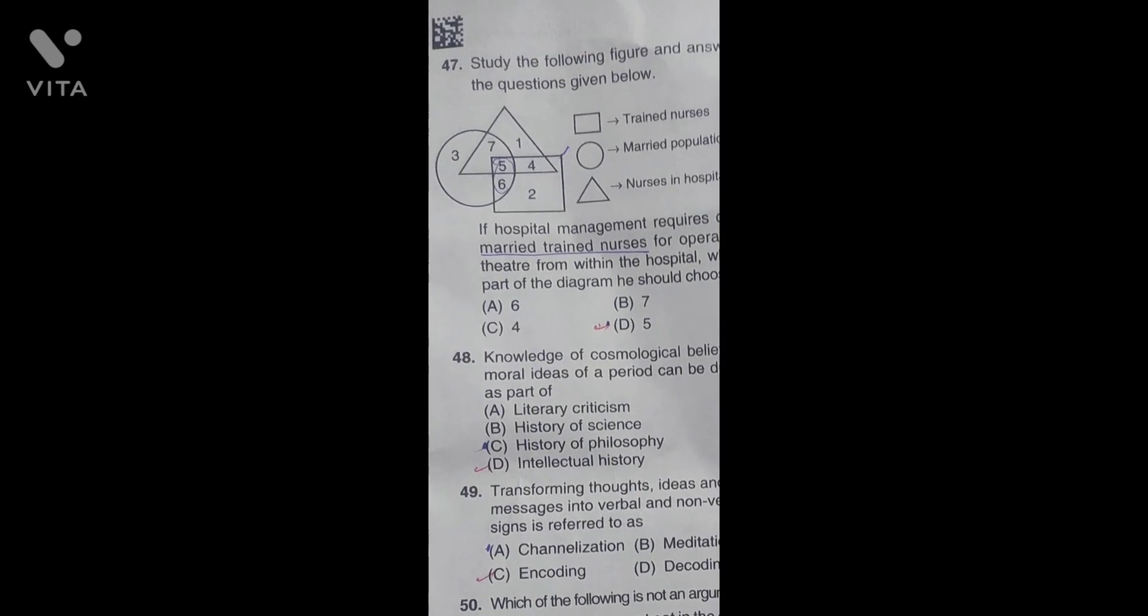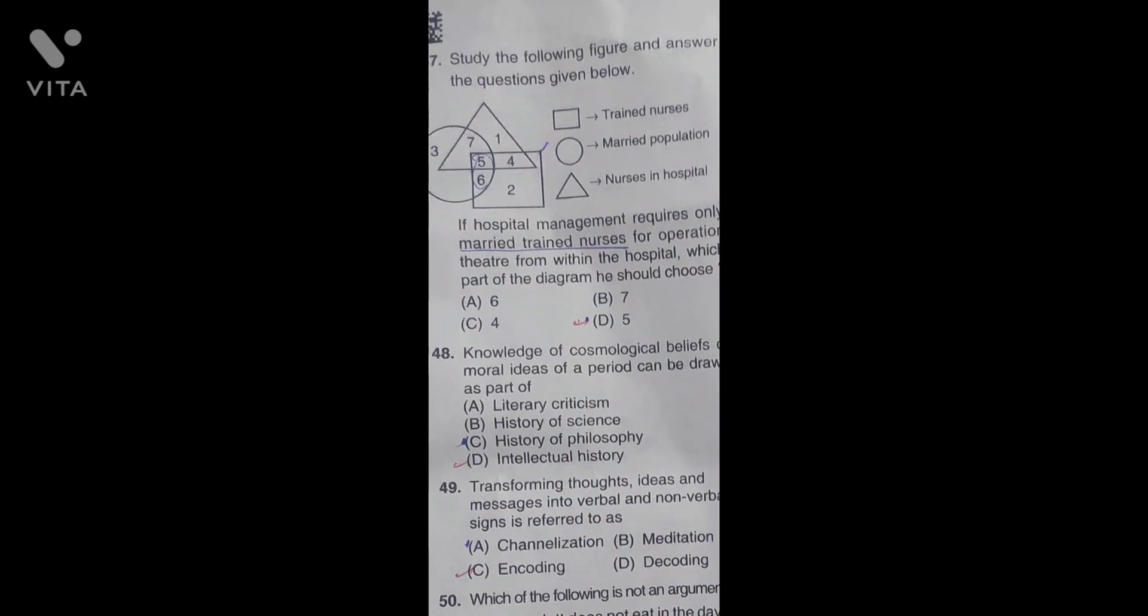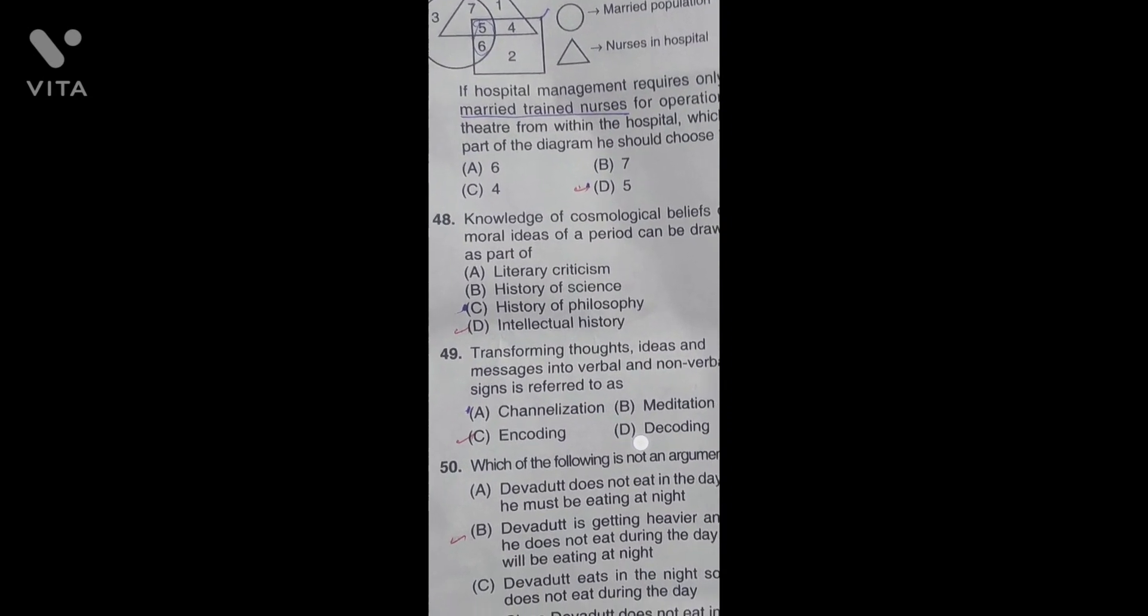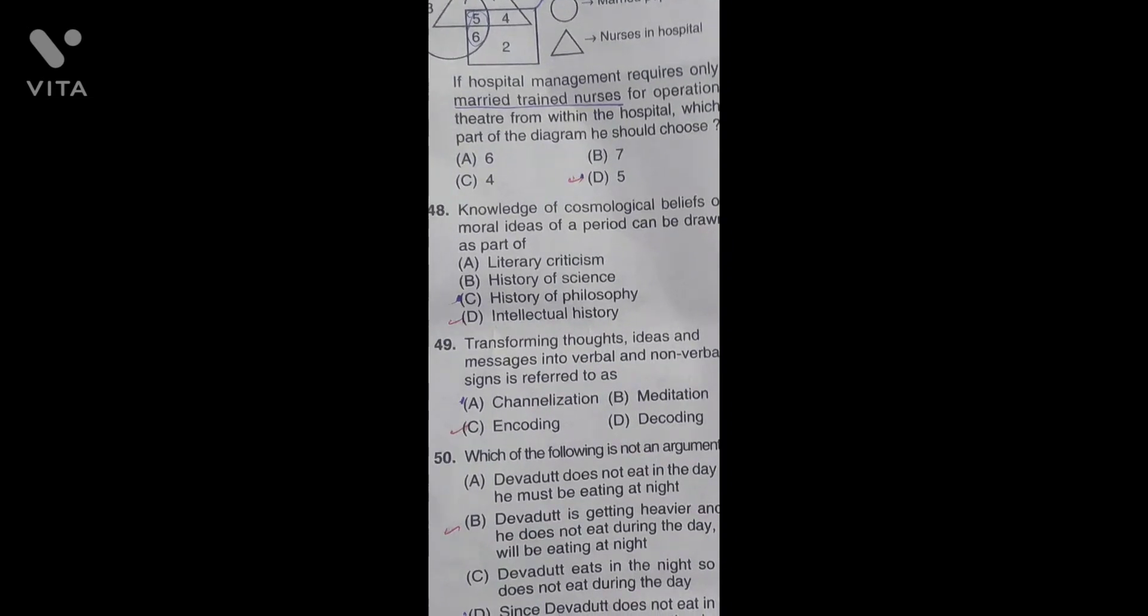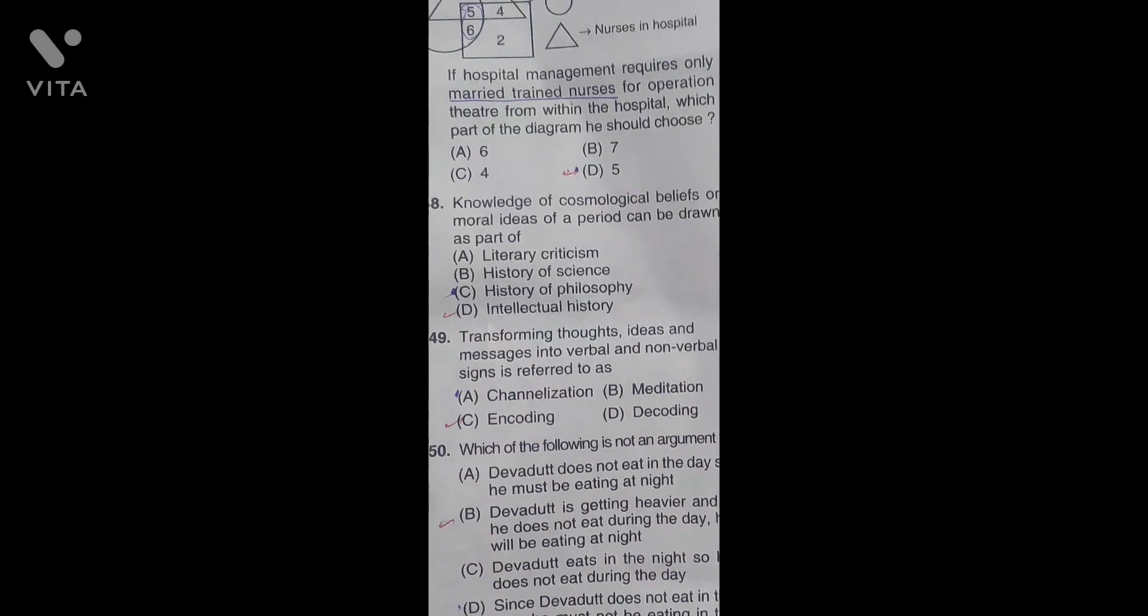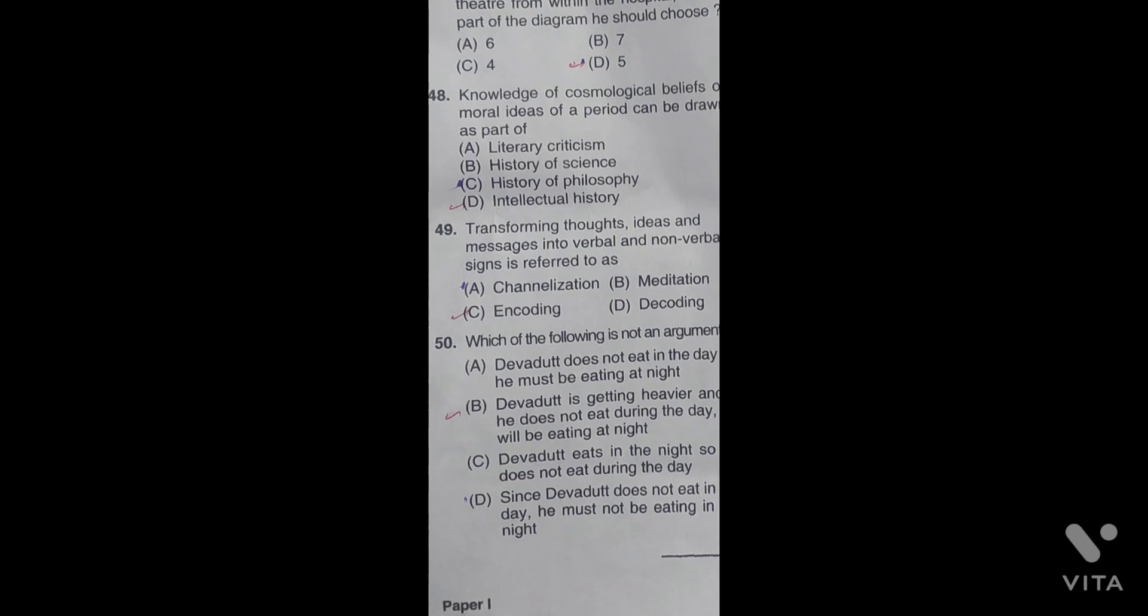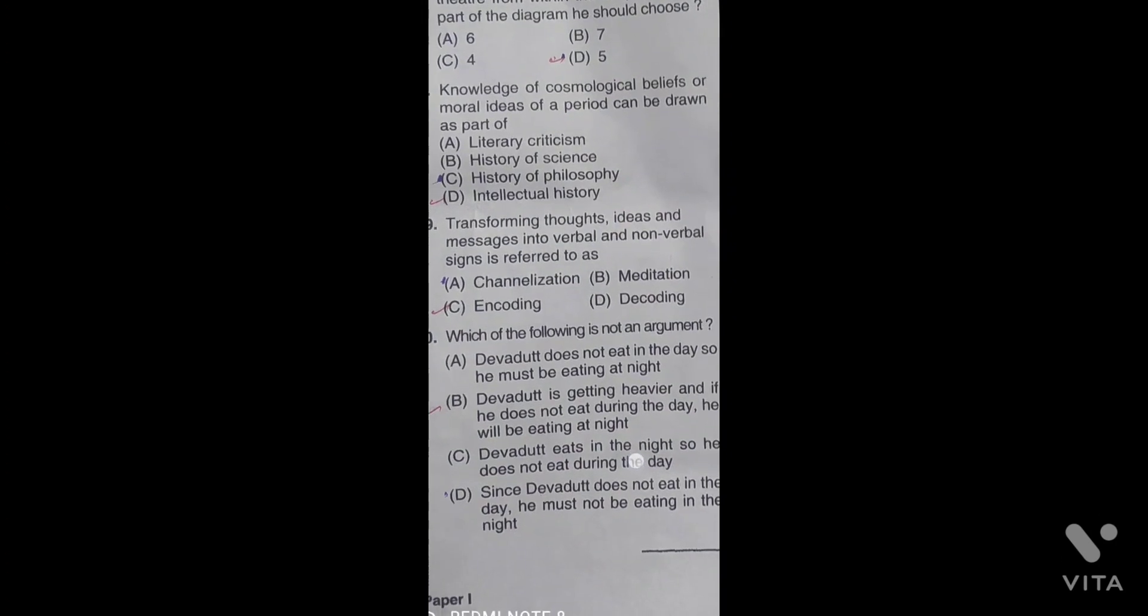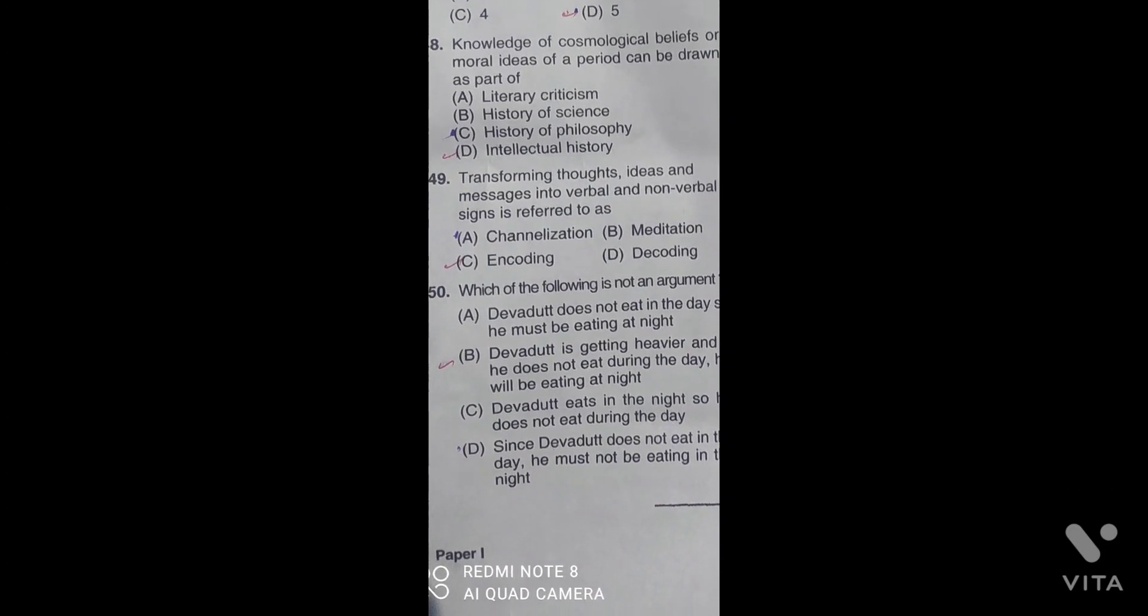The misconceptions about intellectual history systems comes from a body of techniques. Knowledge of cosmological beliefs or moral ideas of a period can be done as a result of intellectual history. Transforming thoughts and ideas into messages in verbal and nonverbal signals is referred to as encoding.